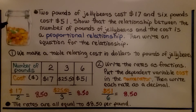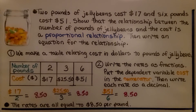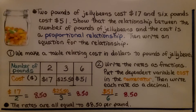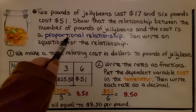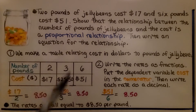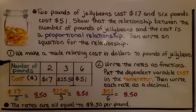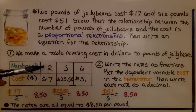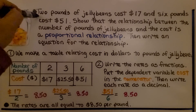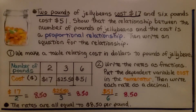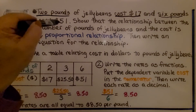Here's a problem about jelly beans: two pounds cost $17 and six pounds cost $51. We need to show that the relationship between pounds of jelly beans and cost is proportional, then write an equation. We start by making a table relating cost in dollars to pounds of jelly beans — two pounds is $17, and six pounds is $51.